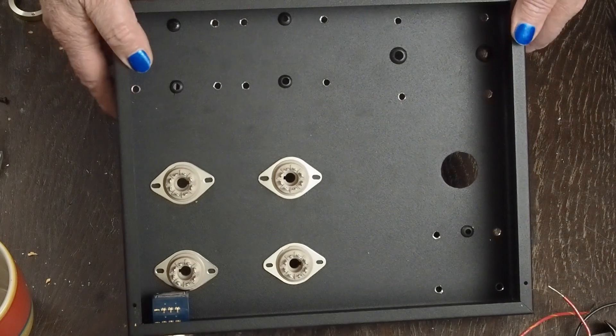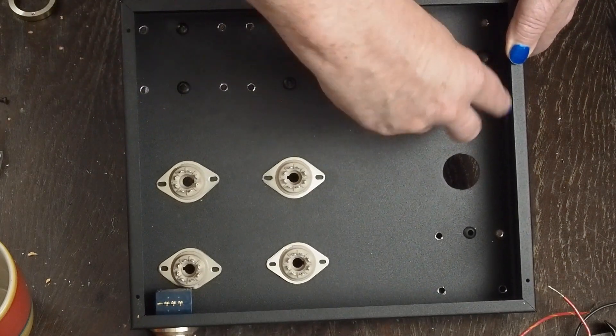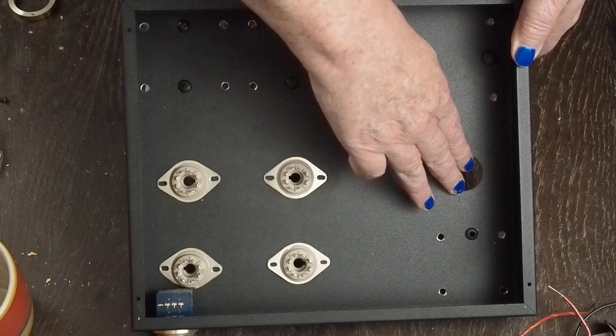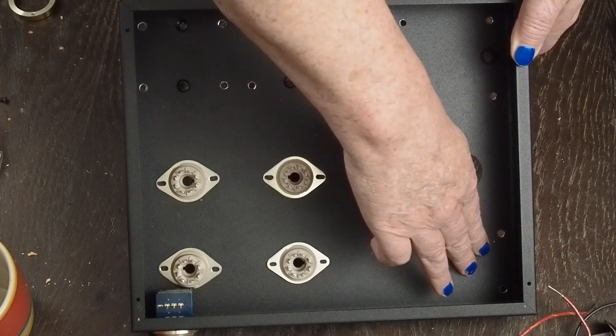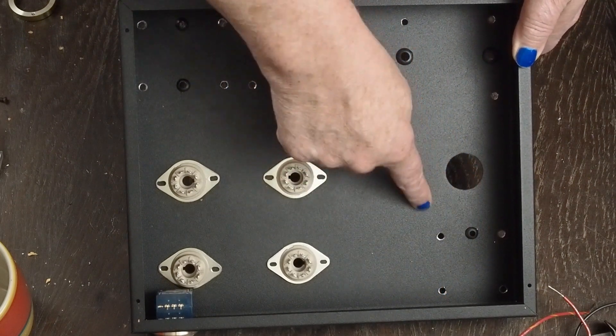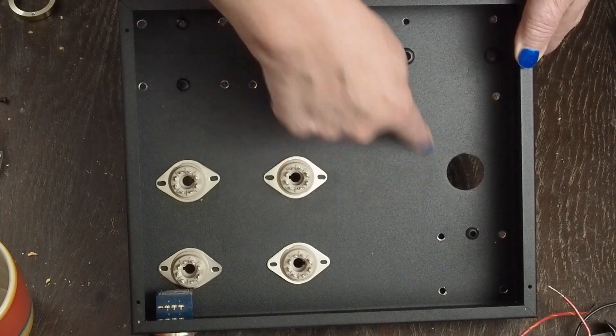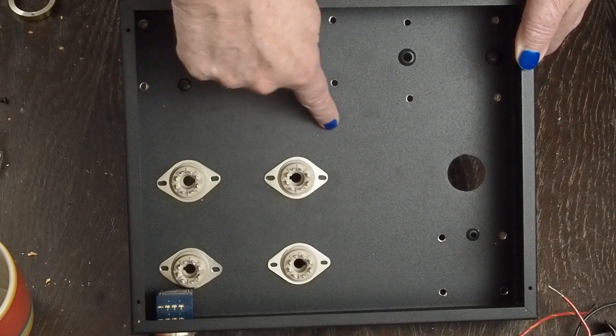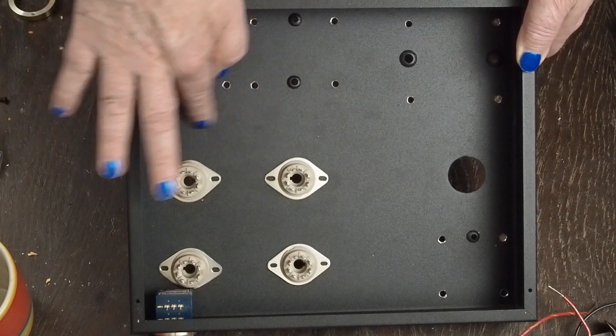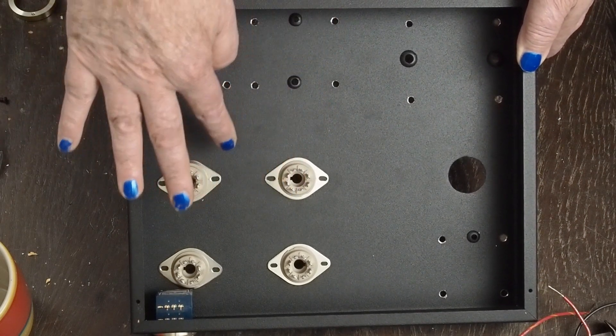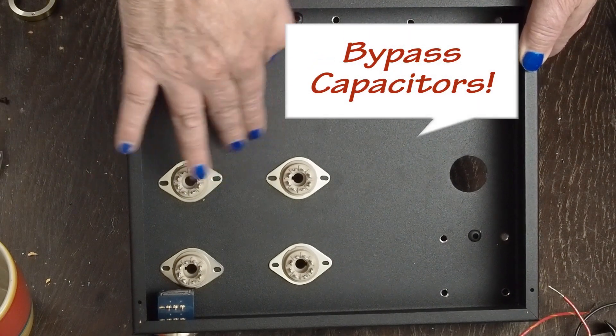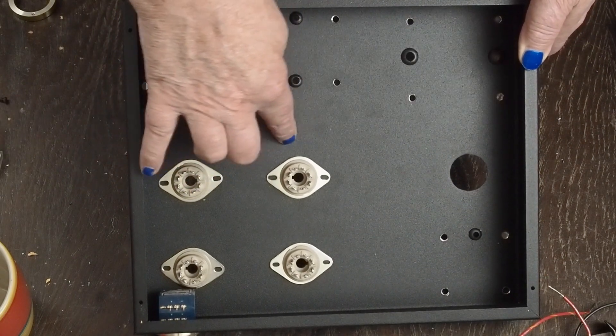On this side we're going to have the power transformer which goes to the rectifier tube, which then goes to the choke. We're going to have the filtering caps mounted right in here, the cathode resistors mounted in this area, and then the cathode bypass capacitors will be mounted somewhere around in here, probably off one of the bolts.